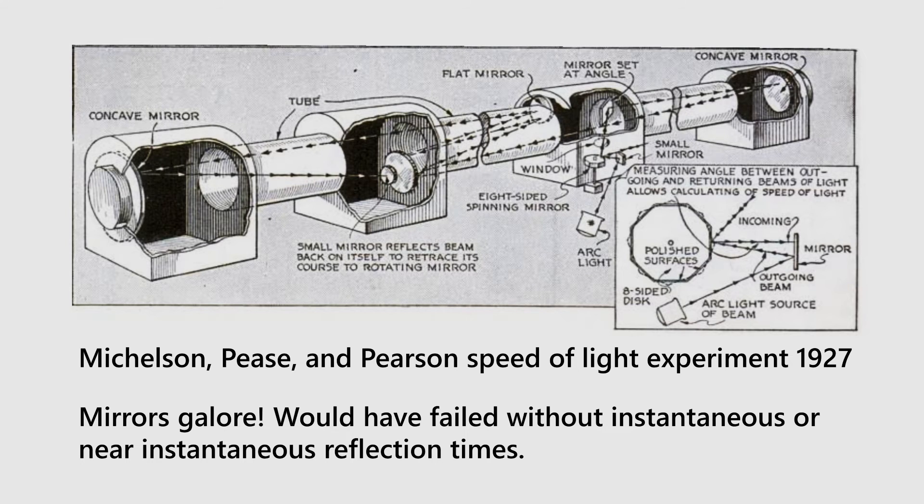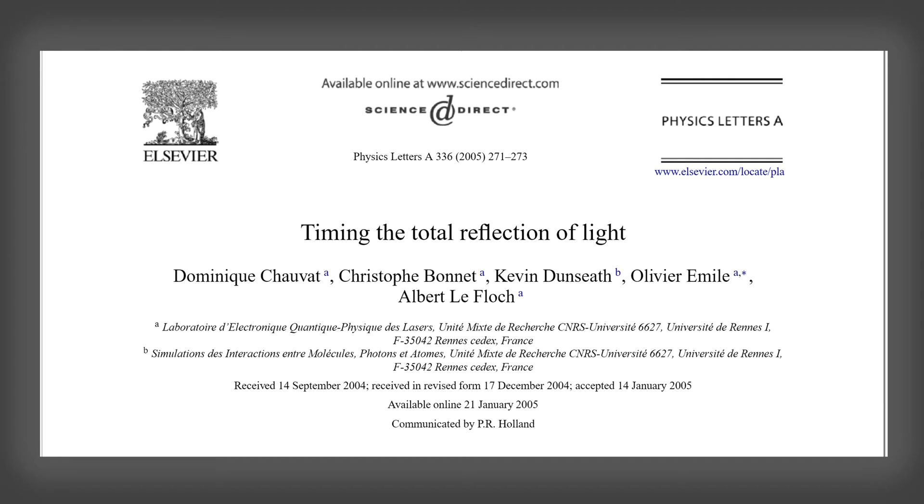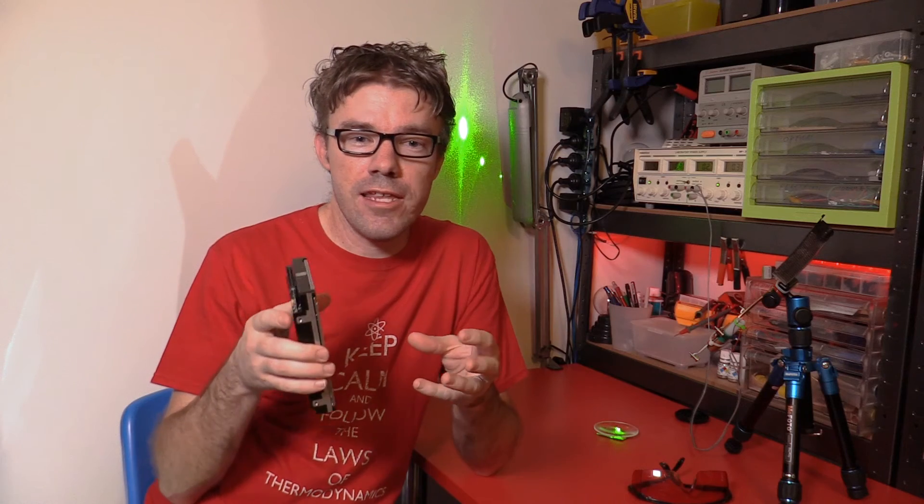However in published experimental science, mirror reflections are usually assumed to be instantaneous. Many scientists have accurately used mirrors as part of large experiments to determine the speed of light. Looking at this in more detail, I found a paper from 2005 in the journal Physics Letters A. They used a reflection off Mercury to calibrate an experiment and concluded that the reflection delay time was less than 0.3 femtoseconds.